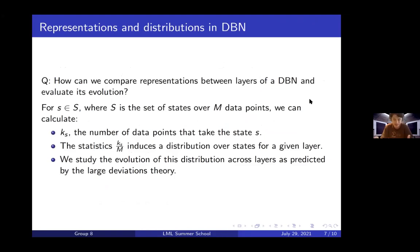The question is how we can construct these distributions. For a deep belief network, for each layer, you have a set of states distributed over all data points. We can calculate Ks, which is the empirical frequency of data points for a particular state in a particular layer. Then Ks over M is the empirical probability of a particular state in a given layer. Then we can study the evolution - how these empirical probabilities evolve across layers and if they conform to predictions by large deviations theory.